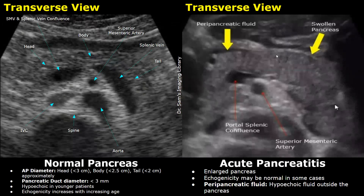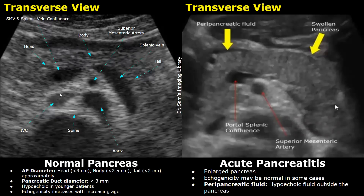This is a different image showing the normal pancreas in transverse plane — the pancreas does not appear enlarged. This round hypoechoic or anechoic structure is the superior mesenteric artery, seen behind the splenic vein. Posterior to the superior mesenteric artery is the aorta. These structures will be seen pulsating in a live ultrasound image. The IVC is seen adjacent to the aorta, and this hyperechoic structure with shadowing is the spine.